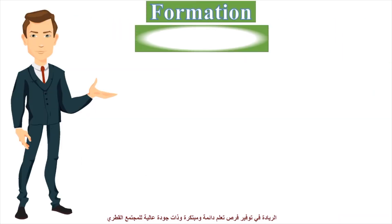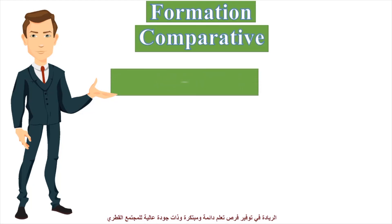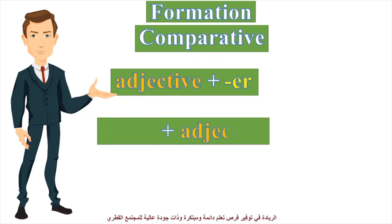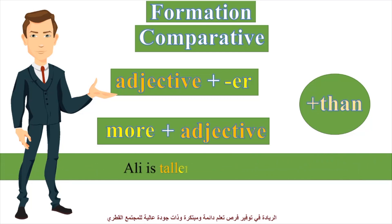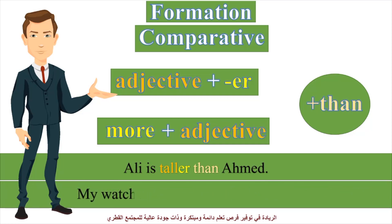Let's begin with the formation of comparative forms of adjectives. If the adjective is one syllable, we have to add ER to it. And if the adjective is more than one syllable — that means two, three, or more — we have to write the word MORE, and do not forget the word THAN. For example, Ali is taller than Ahmad. Tall is a one-syllable adjective; we add ER with the word THAN. Another example: my watch is more expensive than Khaled's. Expensive is a three-syllable adjective; we add MORE with the word THAN.